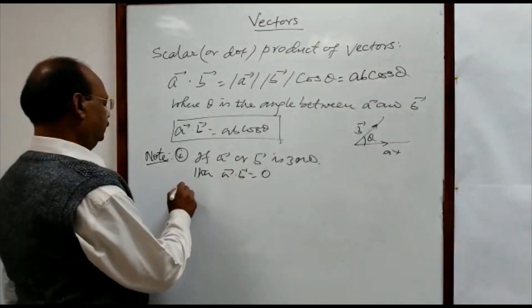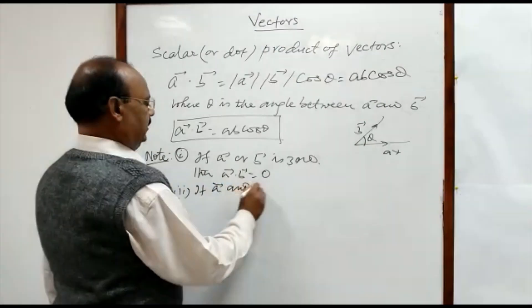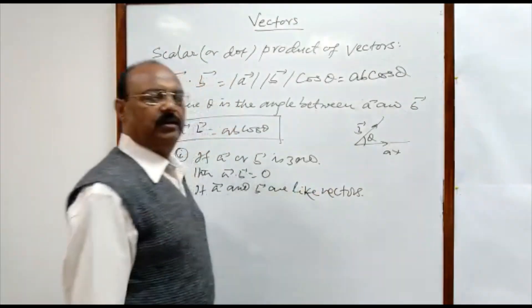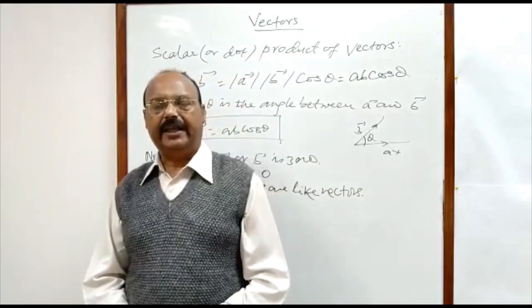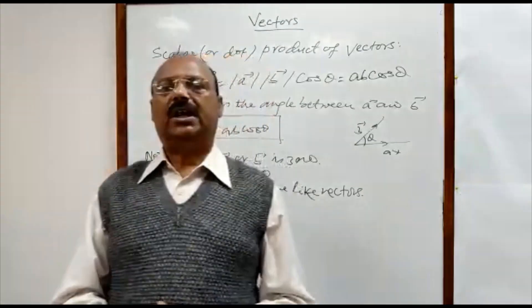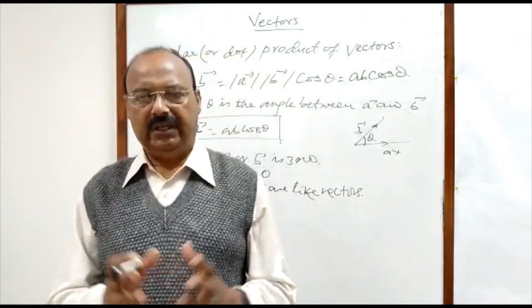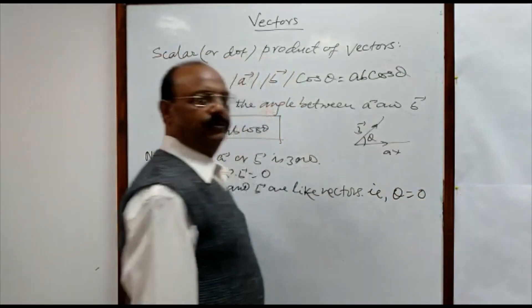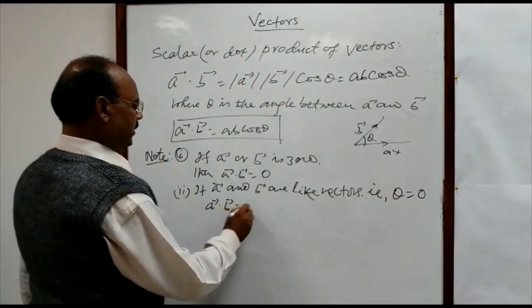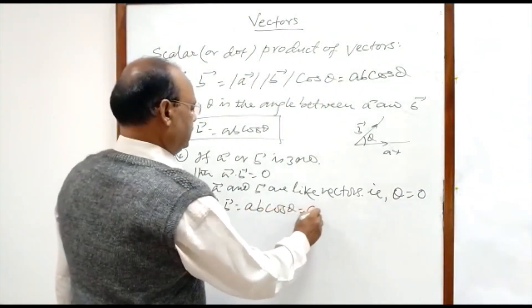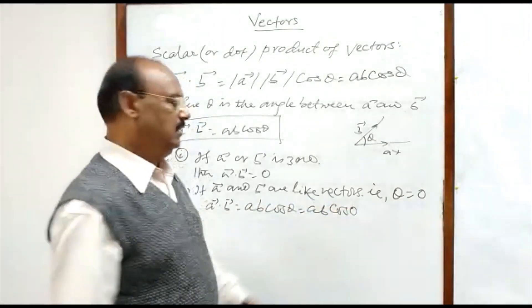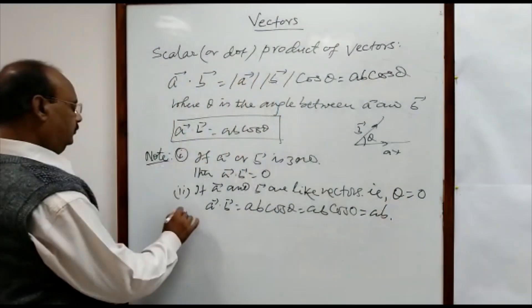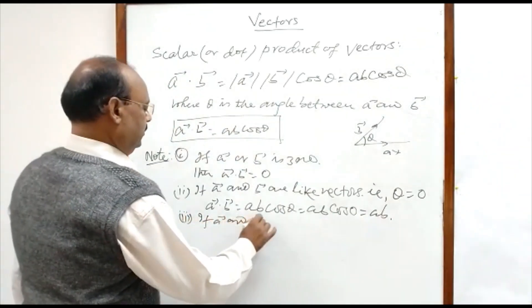Second, if vectors a and b are like vectors — as discussed in the previous video, like vectors are those having the same direction and are parallel to each other — then theta will be zero. Therefore a dot b equals ab cos 0, and since cos 0 equals 1, this simplifies to simply ab.